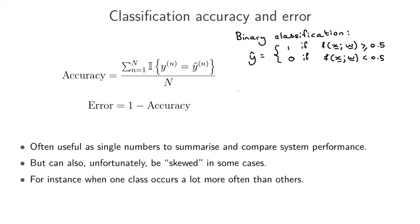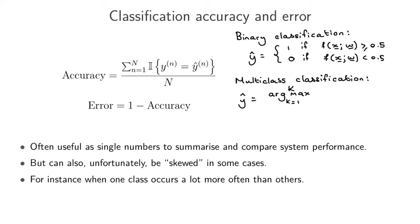That's binary classification. When we're doing multi-class classification, the model output is the argmax over our different classes - from k equals 1 up to K of f_k of our input given our parameters. So here we're basically looking at scores for the different classes and outputting the class with the maximum score.